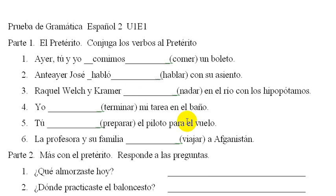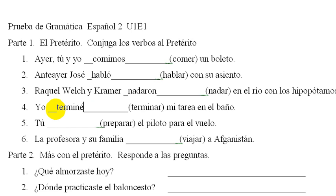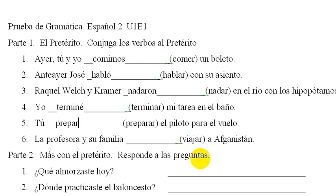These are funny sentences. Nadaron — they swam — nadaron en el río. Cuatro, yo terminé. Again, accent mark over the E. Without it, it changes the meaning. So terminé with accent mark. Cinco, tú preparaste el piloto para vuelos. Preparaste looks like that.